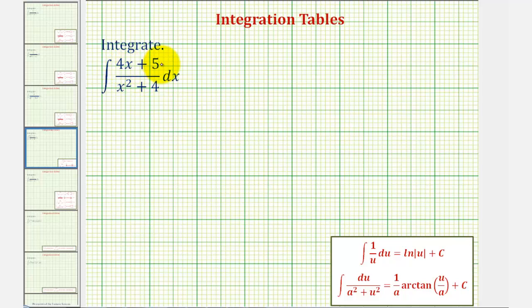We want to find the integral of the quantity four x plus five divided by the quantity x squared plus four. In its current form though, none of our integration formulas seem to apply, but because we have a sum in the numerator here, we can write this as a sum of two different integrals.